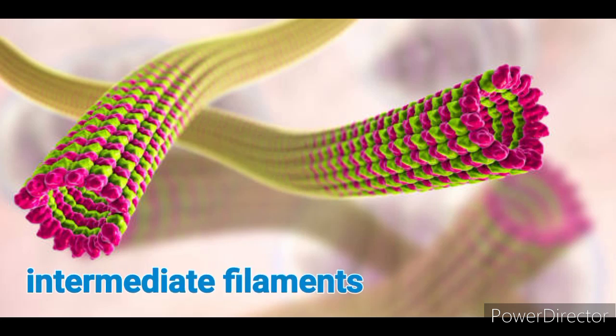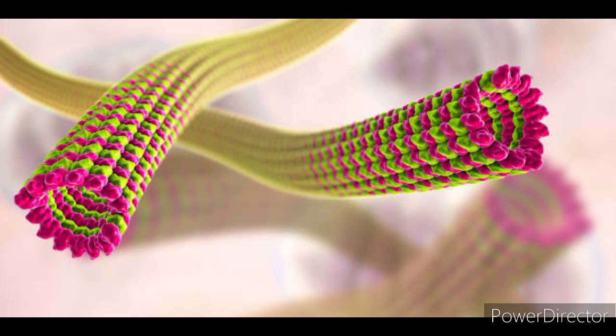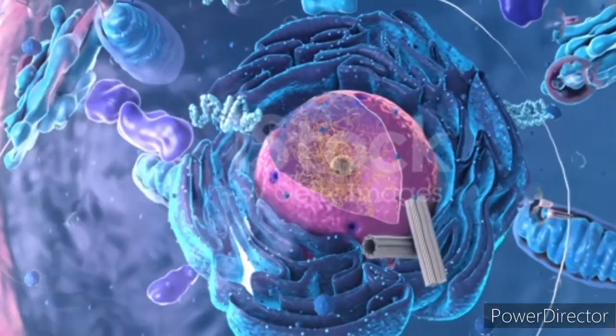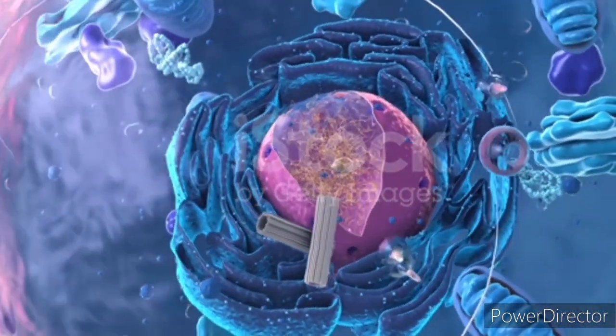Intermediate filaments are thicker and provide mechanical strength to cells. They contribute to maintaining cell shape and structural integrity.